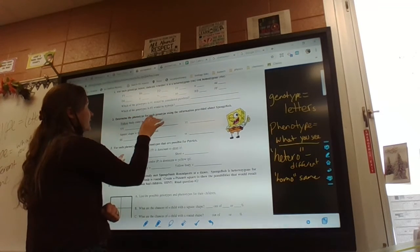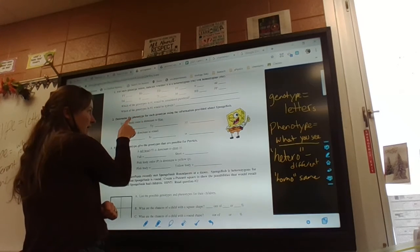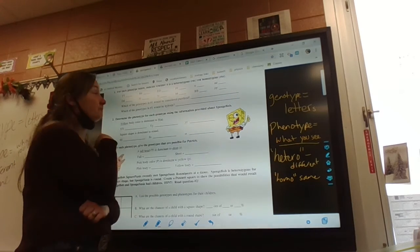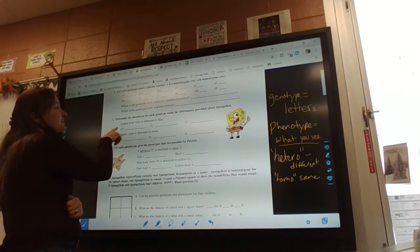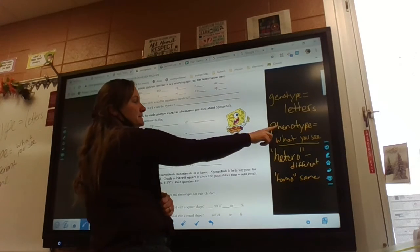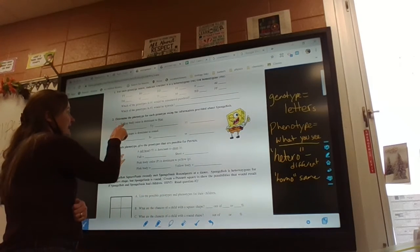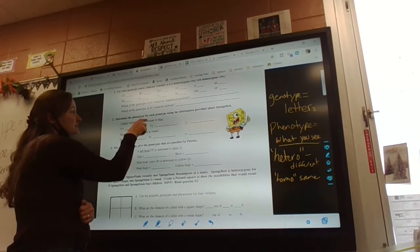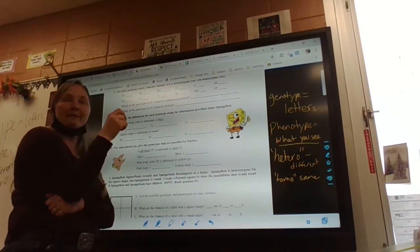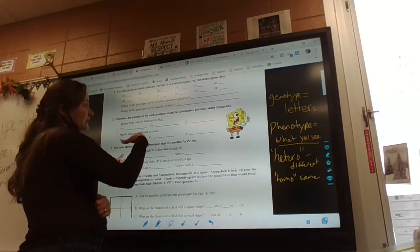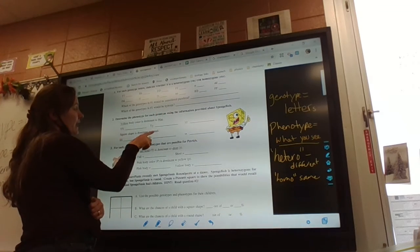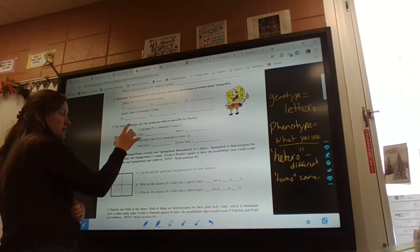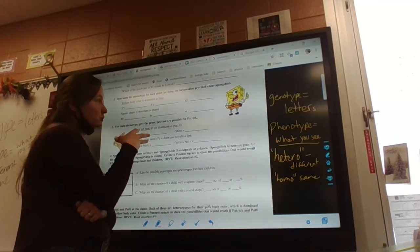When you get here, it says determine the phenotype for each given genotype. Here's where you need to start paying attention. If you are given a genotype, then you have to tell me the phenotype. Remember, phenotype is in words - what you see. Is he going to be yellow or blue? If he's capital capital, yellow is dominant, so that would be represented by a capital letter. That one would be yellow. You have to keep going through the same thing for square or round. You're going to use these genotypes that they tell you. When you get down into the questions, it tells you the letters to use.